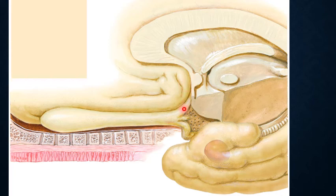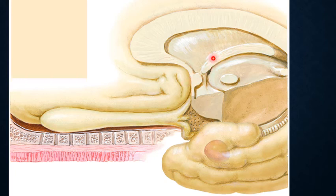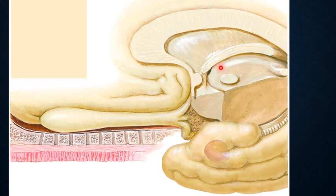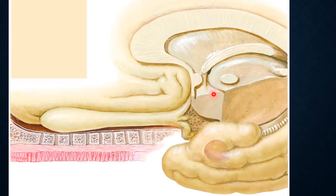Regarding the input and output of the septal nuclei: inputs come from the amygdaloid body via the stria terminalis and the ventral amygdalofugal fibers, and from the hippocampus via the dorsal fornix. Outputs go to the hippocampal formation retracing via the dorsal fornix, to the hypothalamic nuclei, and to the midbrain reticular nuclei via the medial forebrain bundle.